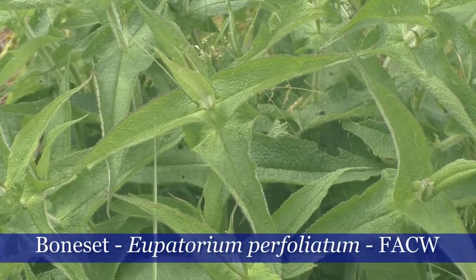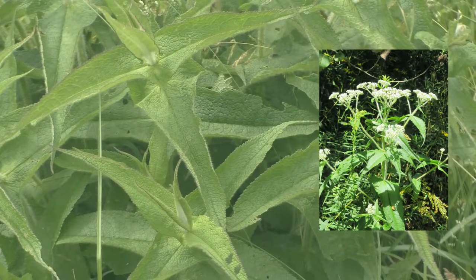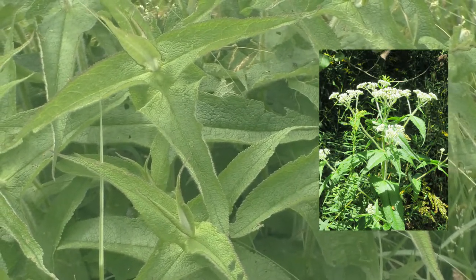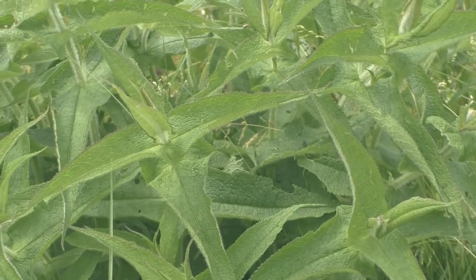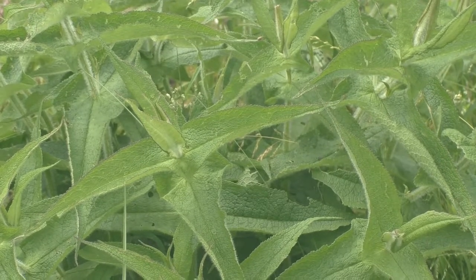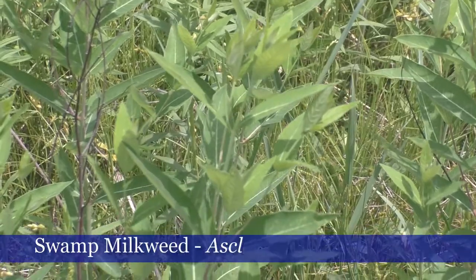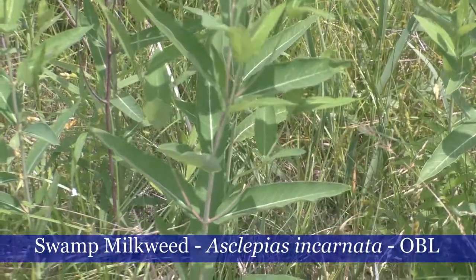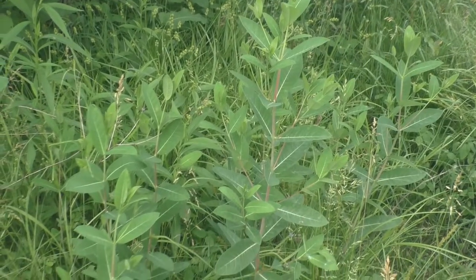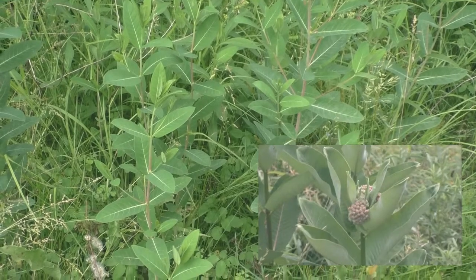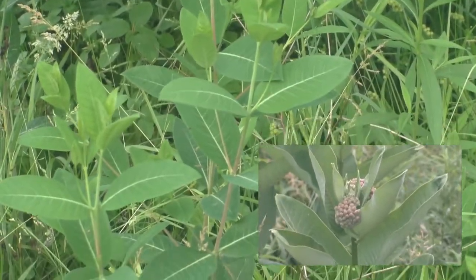You can identify boneset by looking for its paired leaves pierced in the center by its stem. This plant was named during a time when people thought a plant's shape showed what it was good for. Boneset was thought to help heal broken bones, but it has no real medicinal uses. This plant is swamp milkweed. Notice its stem does not pierce its leaves like boneset, and it also has a smoother appearance. You can tell swamp milkweed from its upland cousin, common milkweed, by the width of its leaves.